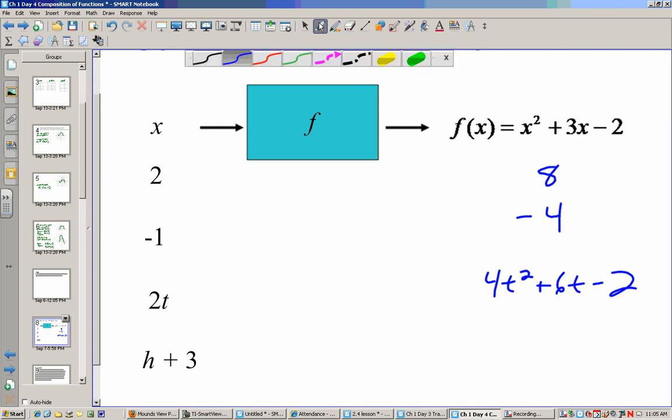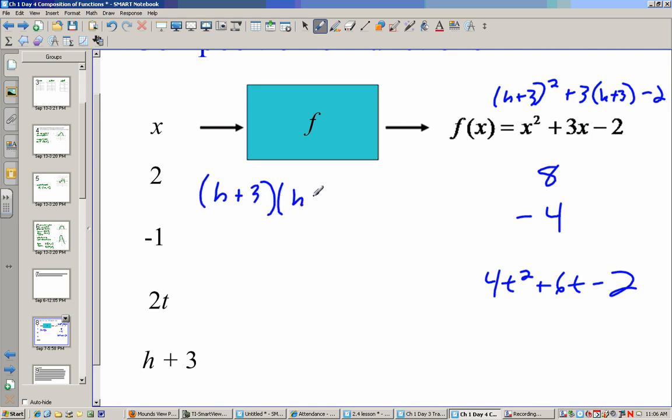h plus 3, one extra step here. h plus 3 squared plus 3 times h plus 3 minus 2. Well, h plus 3 squared is the same thing as h plus 3 times h plus 3, which is h times h, the first, which is h squared, the outsides which is 3 times h, the insides which is 3 times h, and then the last which is 3 times 3, which is 9. So we combine this to be h squared plus 6h plus 9.